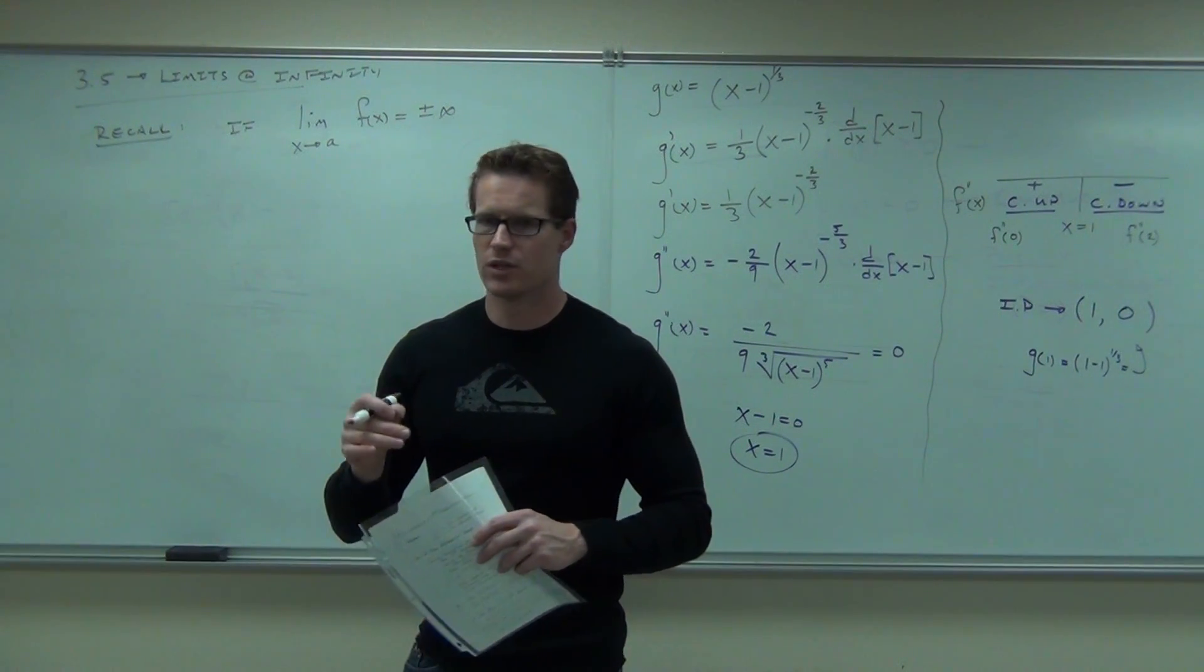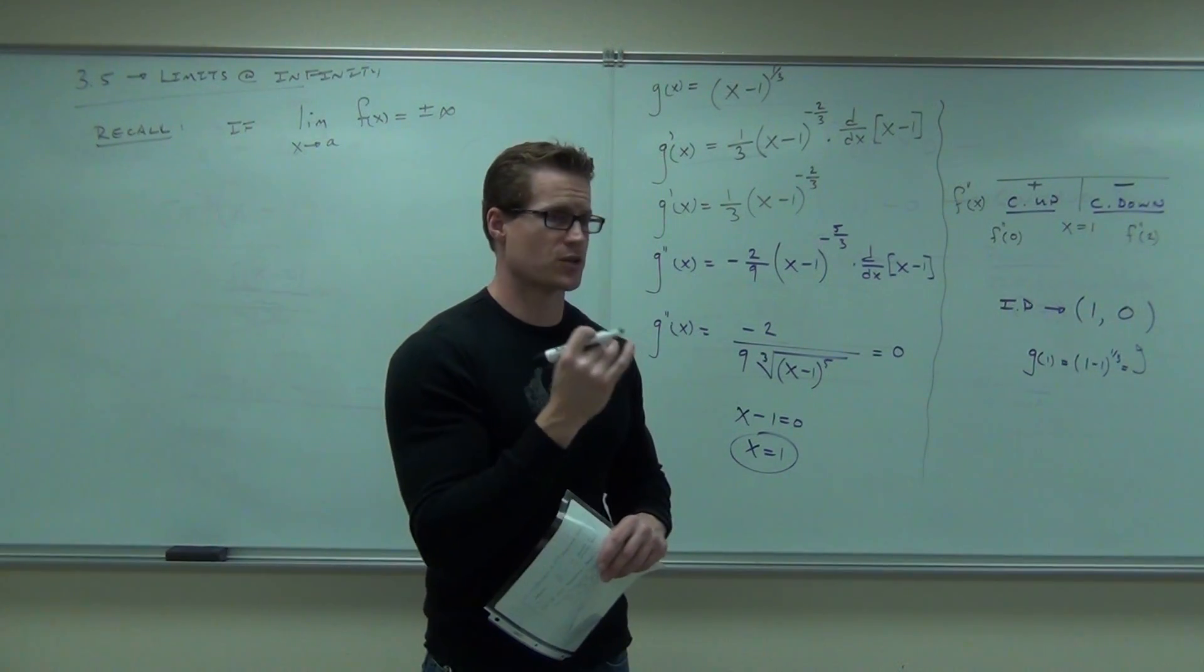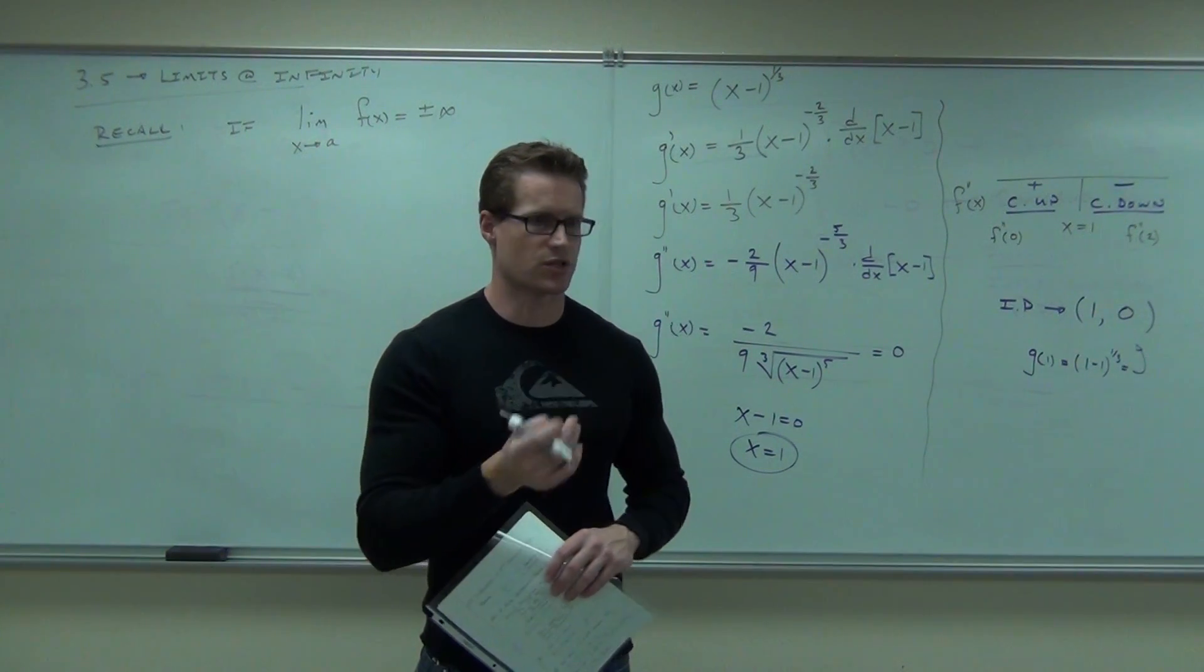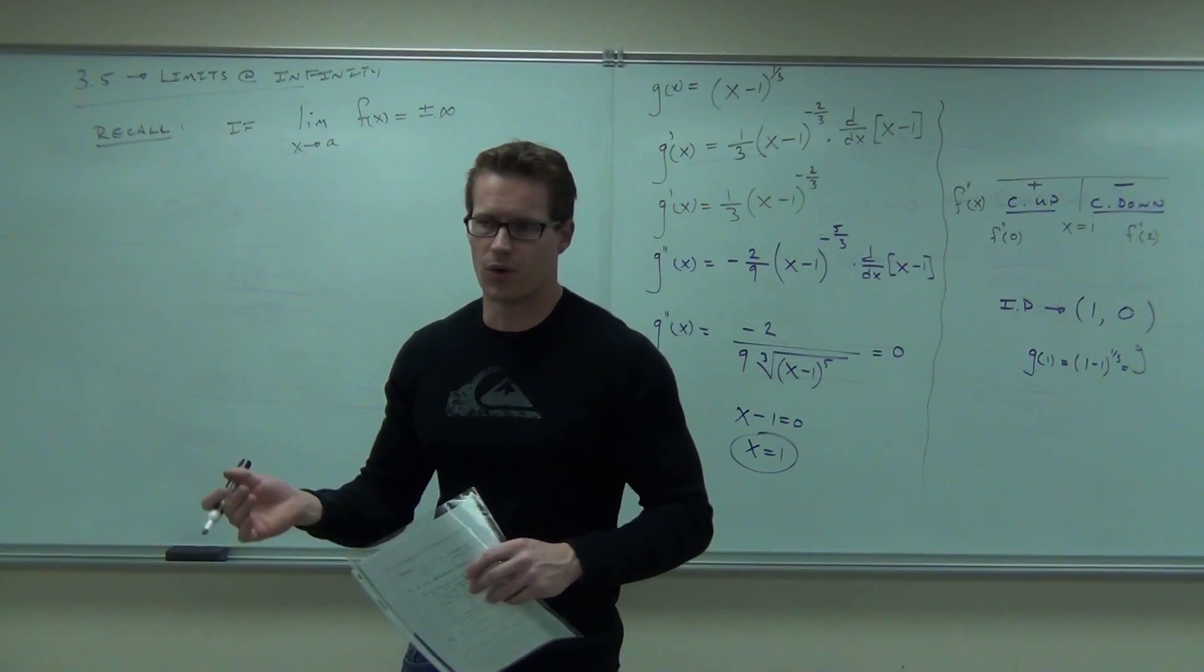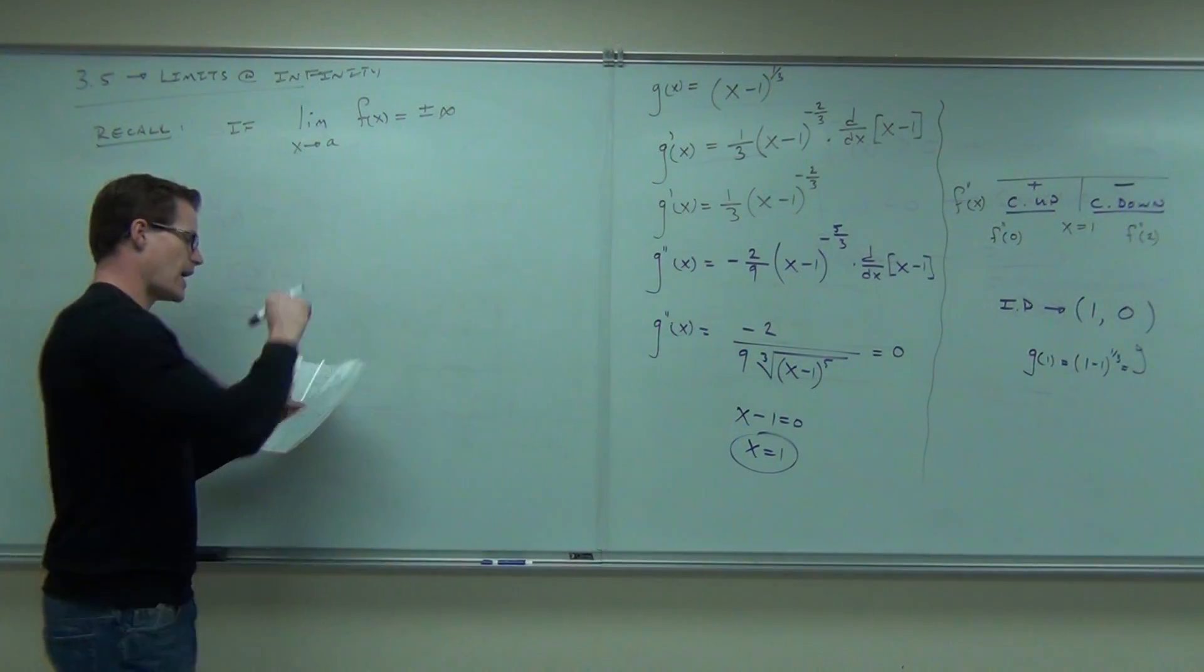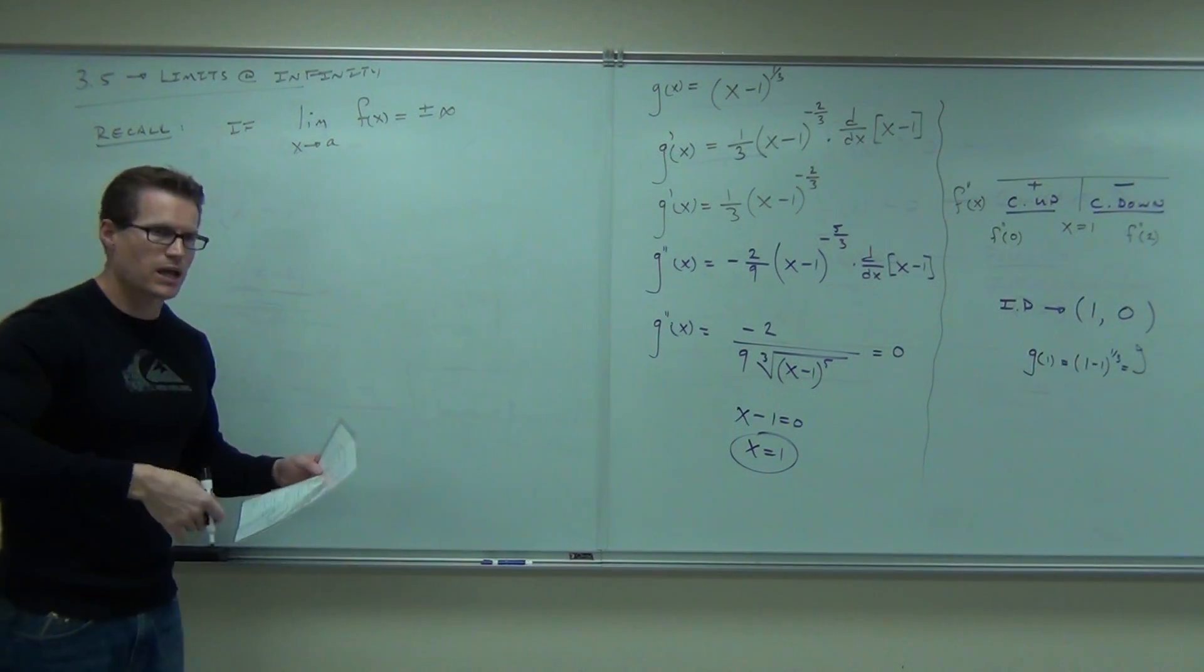Basically, when you could not cross out the problem on your limit, you had an asymptote. When you could cross it out, it's called a removable discontinuity, it's called a hole. This right here will give you an asymptote at the value of a.